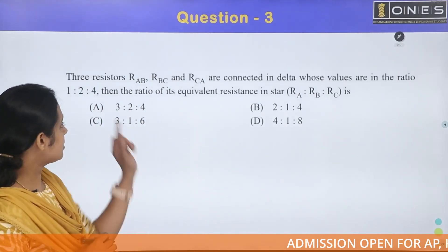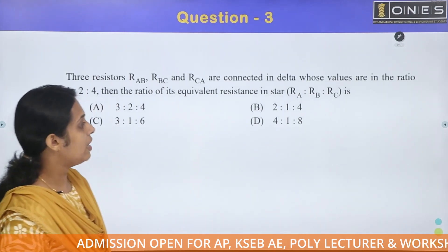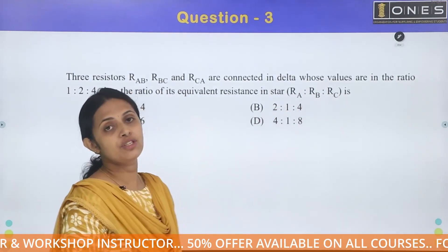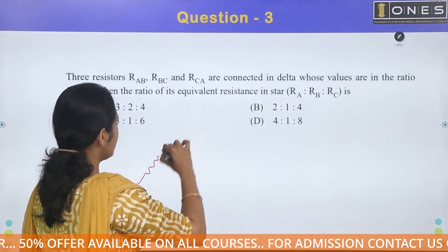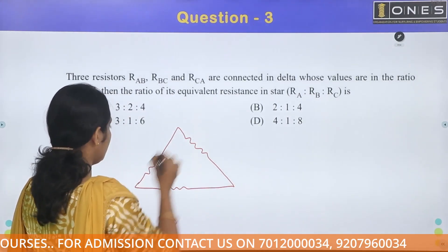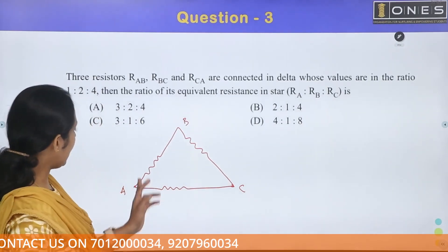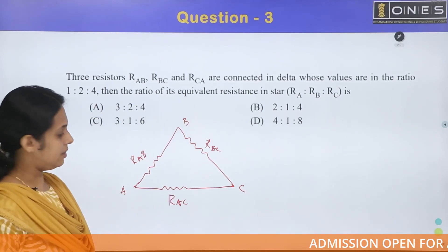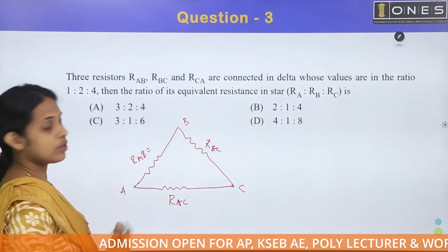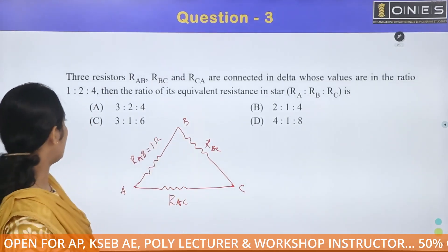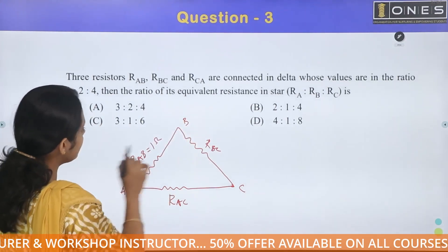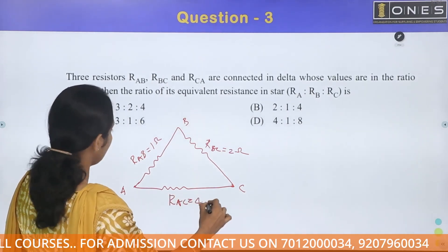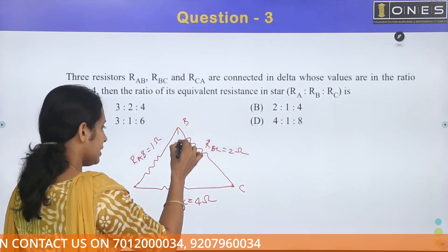Next question. Three resistors RAB, RBC, and RCA are connected in delta whose values are in the ratio 1:2:4. Find the ratio of equivalent star resistances RA:RB:RC. We have three terminals A, B, C in delta. Let RAB = 1 ohm, RBC = 2 ohm, and RCA = 4 ohm.